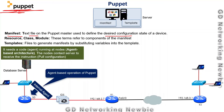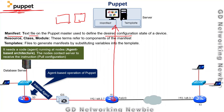The key difference in Puppet is that the server does not automatically send files to the nodes. Instead, the nodes must send a request to the server to receive the instructions. This is called pull configuration, because the networking devices pull the configuration from the server.